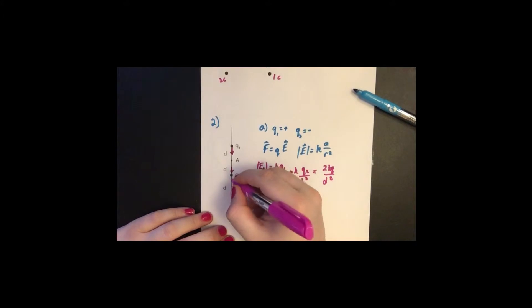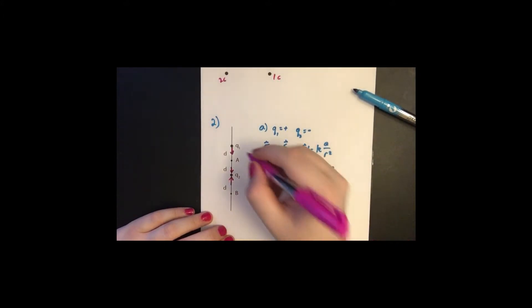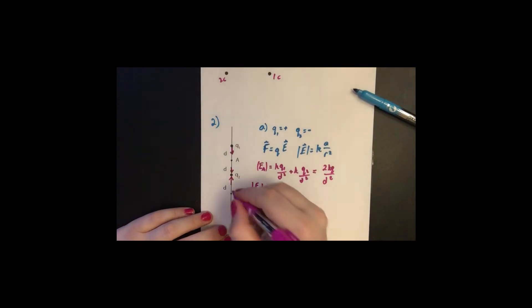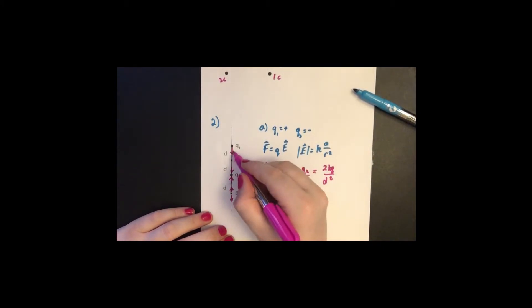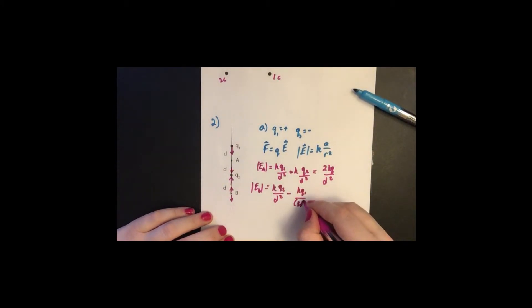For EB, however, Q2 is pointing towards it still, but Q1 is now away. So their fields are going in opposite directions. So they're going to subtract from each other. So KQ2 over D squared minus KQ1 over 3D squared because it takes three distances squared. And this gives us 8KQ over 9D squared.